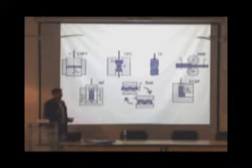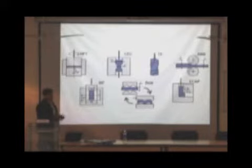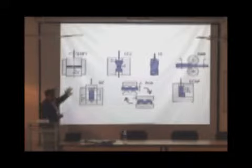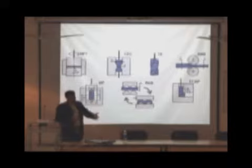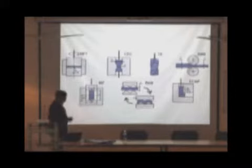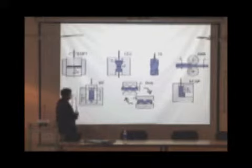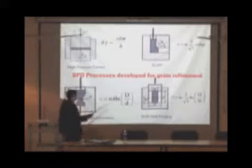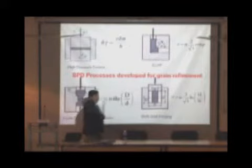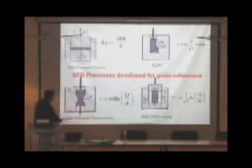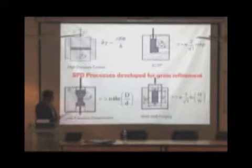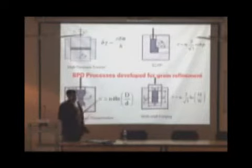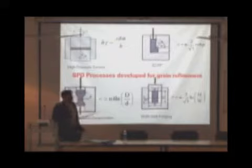The strain is being induced, the microstructure is changing, and the coarse grain metal is becoming an ultrafine grain metal. This is multiple forging process. This is equal channel angular pressing. This is cyclic extrusion compression process, multi-axial forging process.